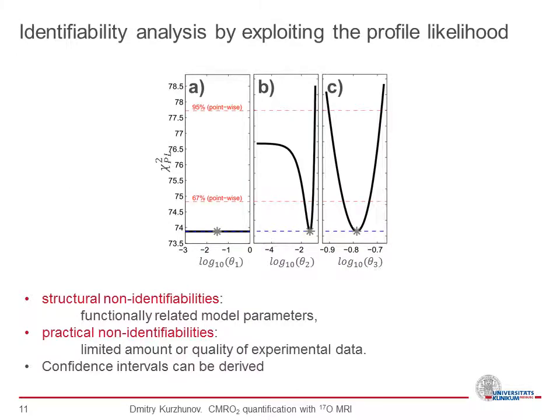There are two types of non-identifiability. The first is structural non-identifiability, seen on the left, where the parameter profile is flat — meaning the model cannot be used to quantify this parameter. The second type is practical non-identifiability: the 95% threshold is hit only on one side, indicating a limited amount or quality of experimental data. When the threshold is hit from both sides, the parameter is identifiable.